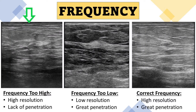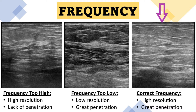In the first image, the frequency is set too high, giving high resolution in the tissue but a lack of penetration down deep to the chest wall. In the second image, the frequency is set too low — there's great penetration all the way down to the chest wall, but it's a low resolution image and you can see the image is much grainier. In image three, the frequency is set correctly, giving both high resolution and good penetration all the way down through to the chest wall.